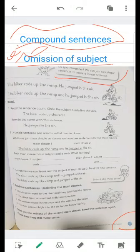In this way, we have to omit the subject. For instance, omission of subject. Omission means deletion. When do we delete the subject? Let's see together. Do you remember? We can join two simple sentences to make a longer sentence. Look at the first sentence. The biker rode up the ramp. He jumped in the air.